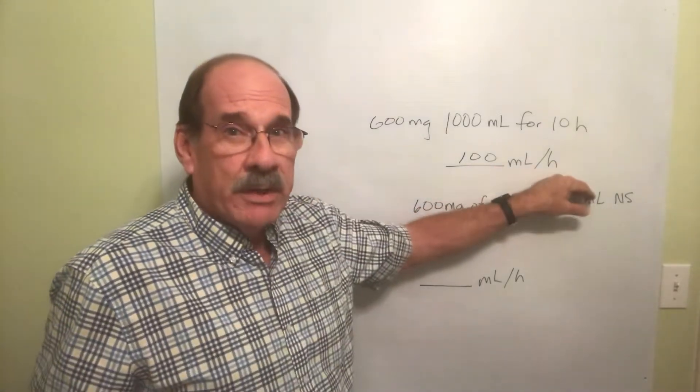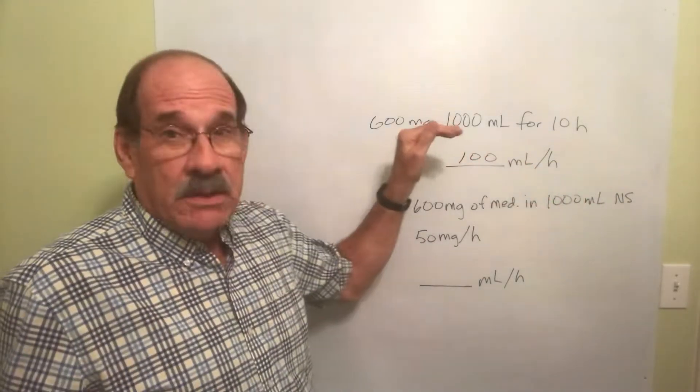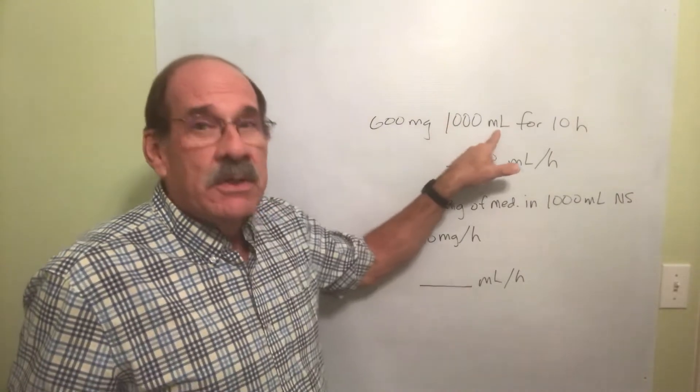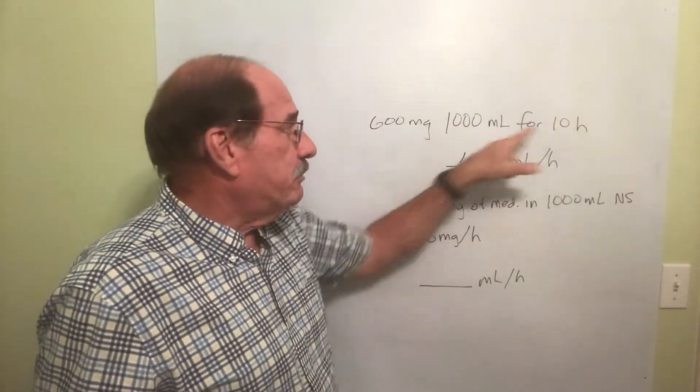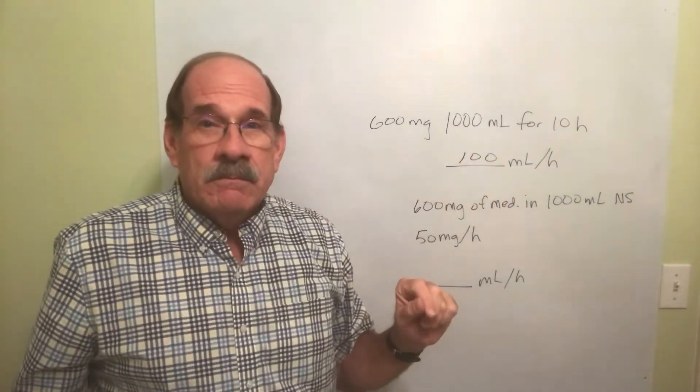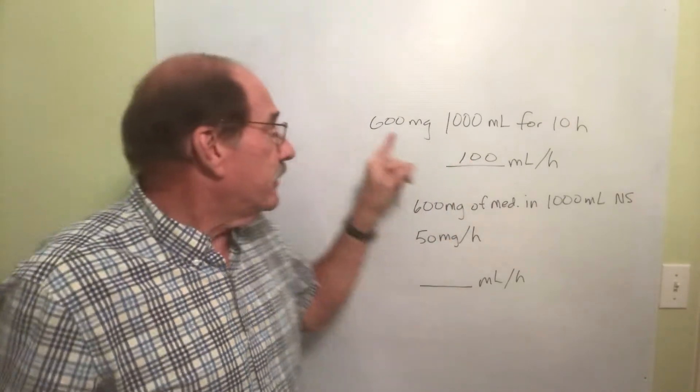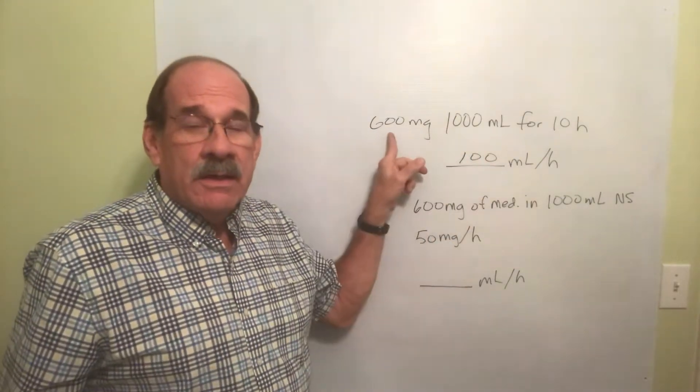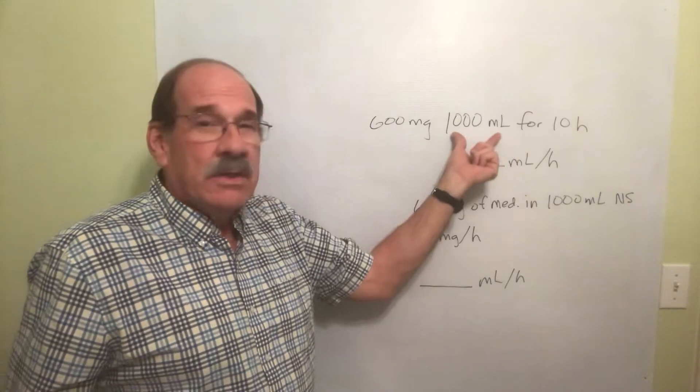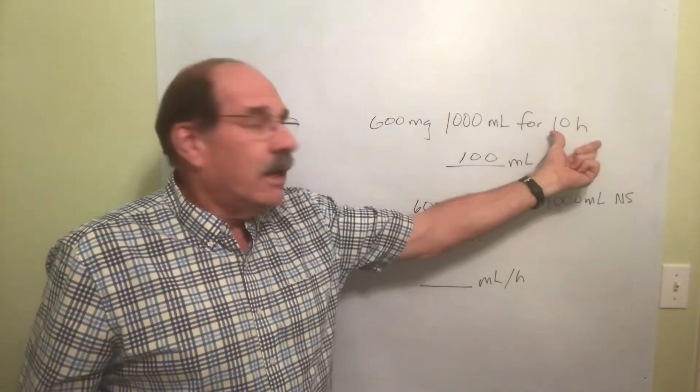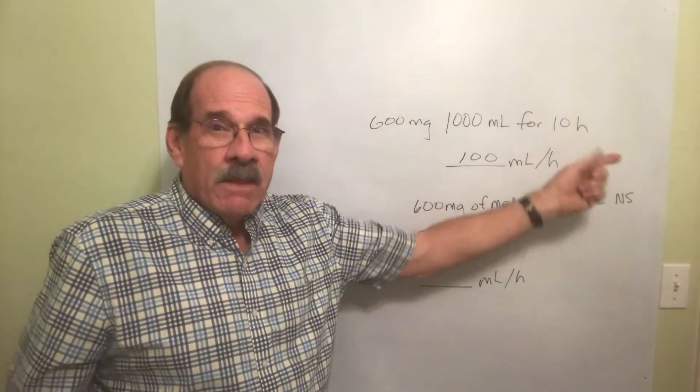That doesn't become involved in the calculations. All you have to know is how many milliliters per hour. I'm just told I'm gonna get the 1000 milliliters for 10 hours. I divide this by this and that's my answer. In this case it doesn't matter if there's medicine dissolved in here or not, as long as you're told how much volume to give and what length of time to give it.